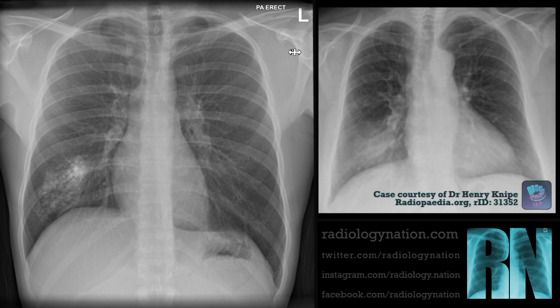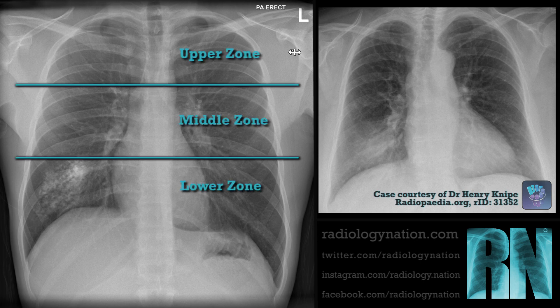Difficulty in lobar localization can arise when the consolidation does not extend to the mediastinal or diaphragmatic surfaces, as demonstrated in this case. In these situations, simply describe which zone of the lung contains the consolidation, as opposed to the lobe.